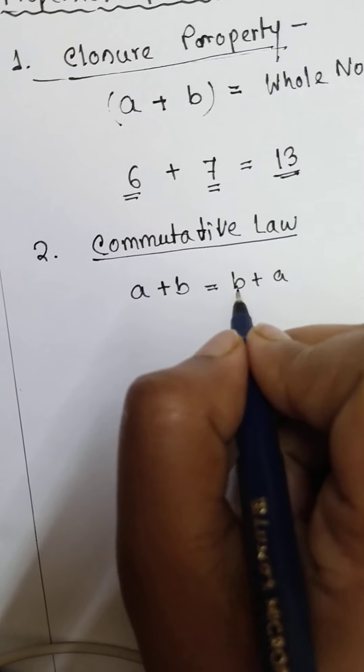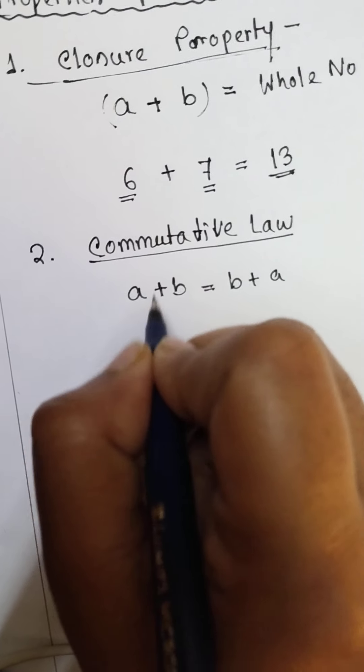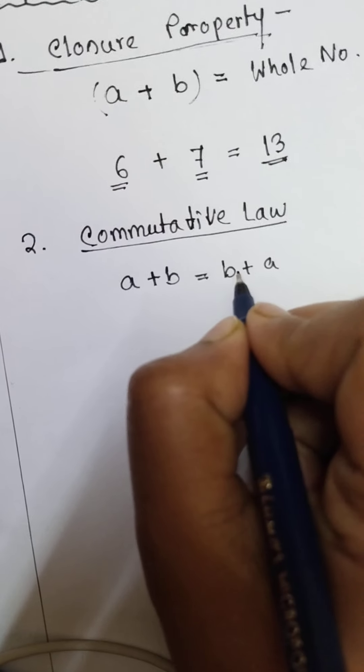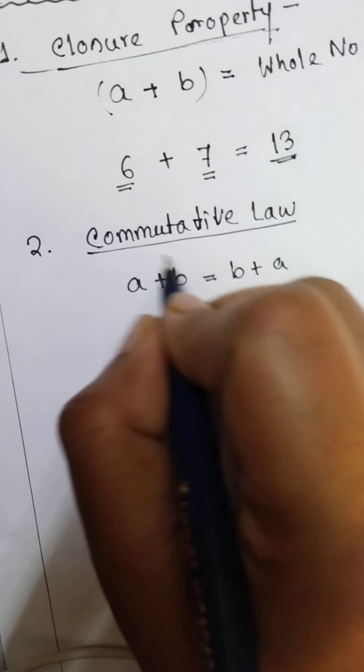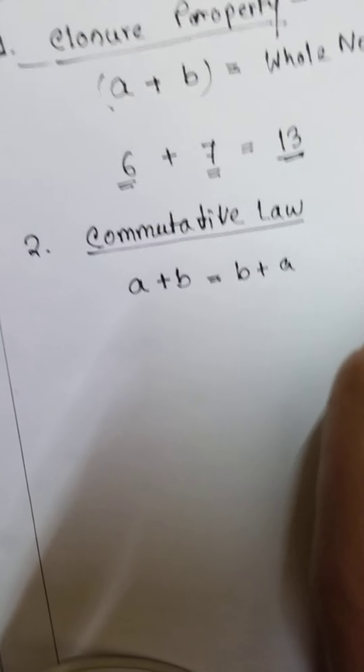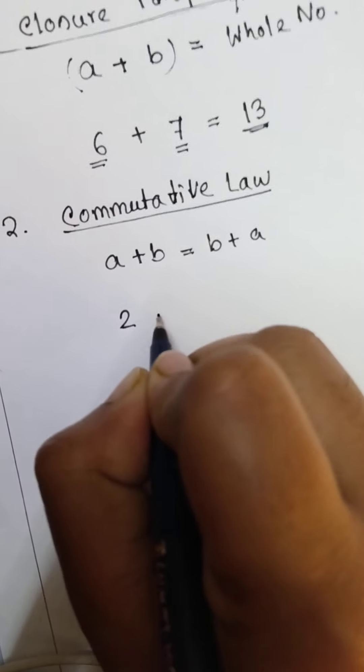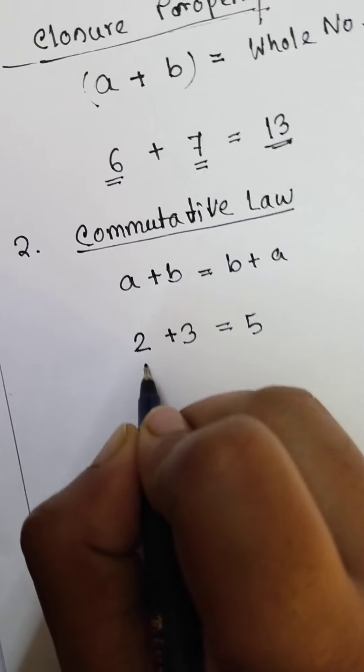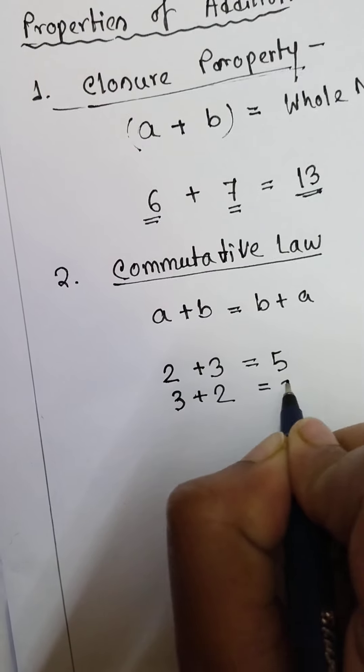The change in their ordering - at first I have written a and then we add b. This changing in position will not hamper its result. Suppose 2 plus 3 is 5. If we write it like 3 plus 2, we will get 5.